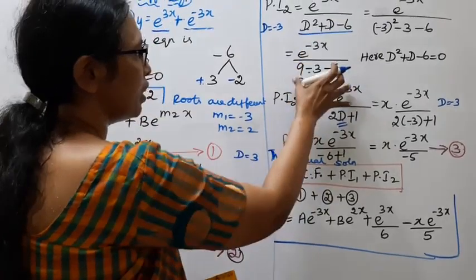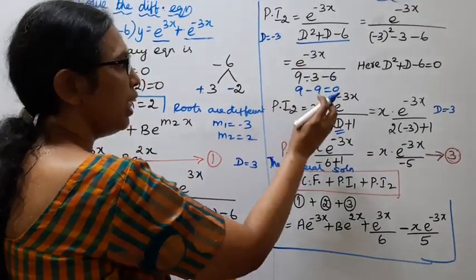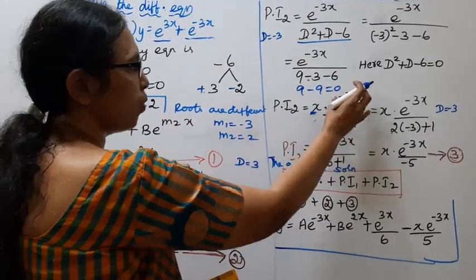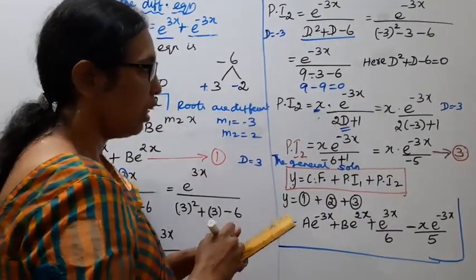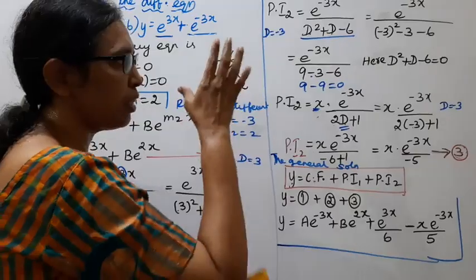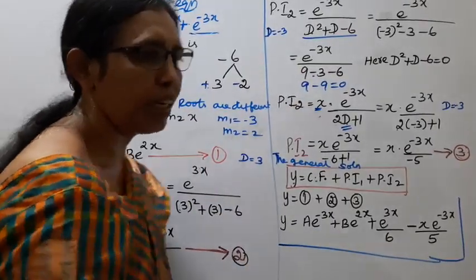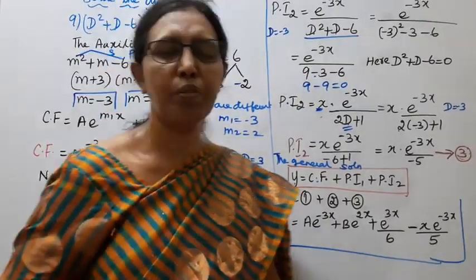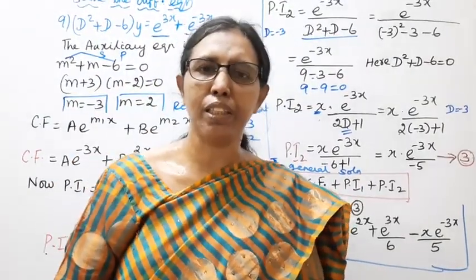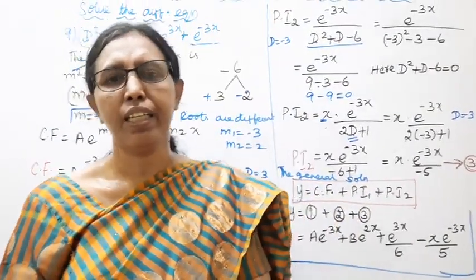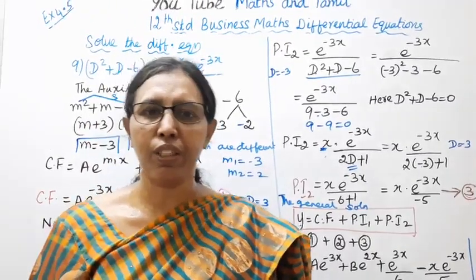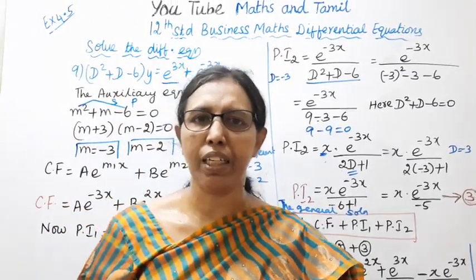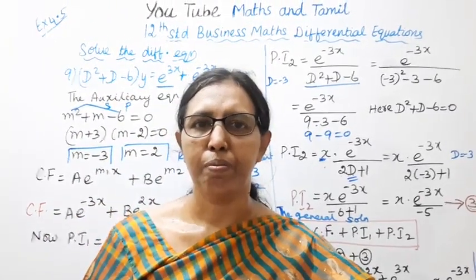When the denominator is 0, multiply x into the numerator and differentiate the denominator — that is the method. This is the general solution. We hope this helps you get 100 marks. Thank you.